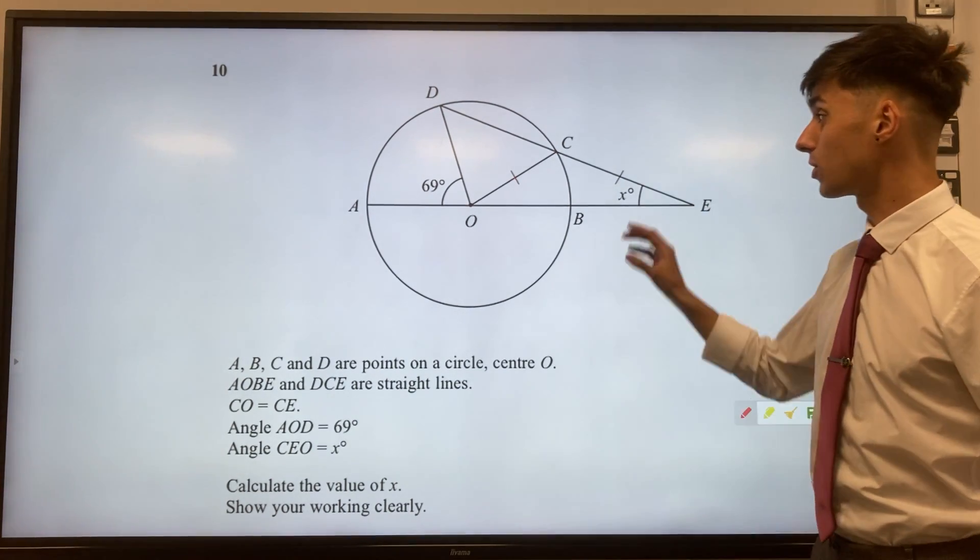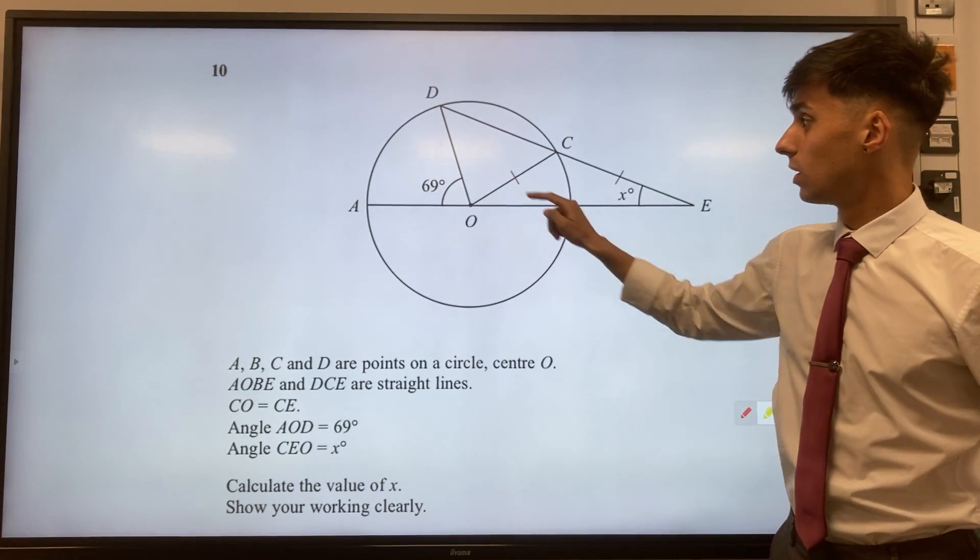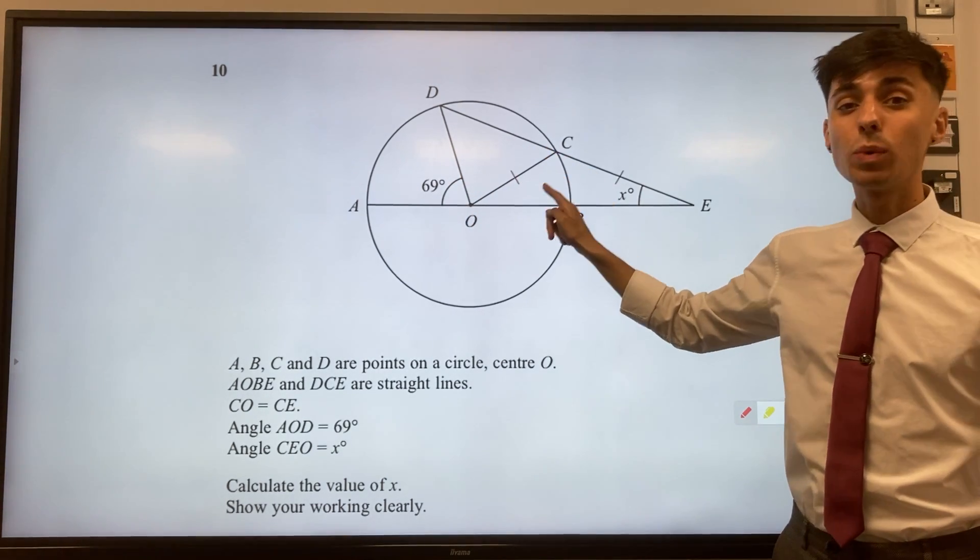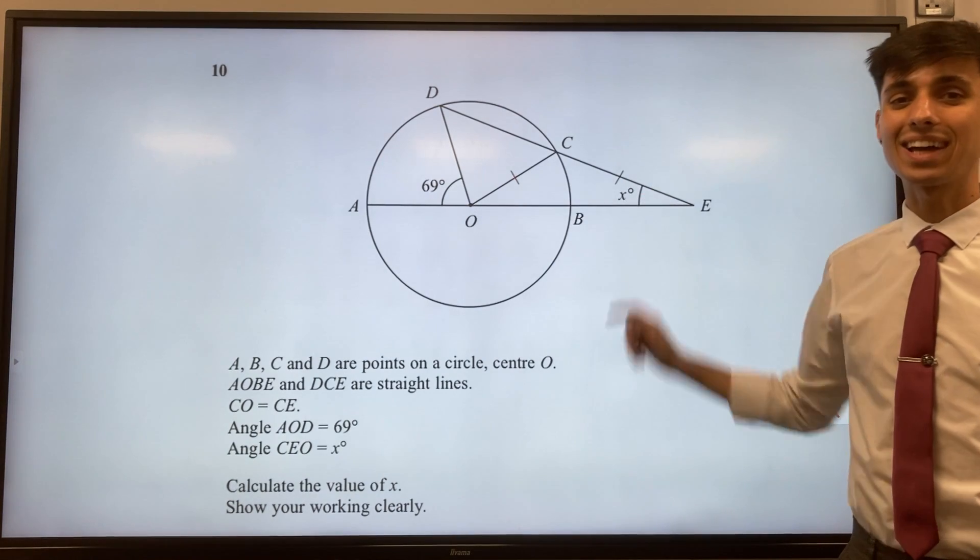In this question we get given a circle with an angle here of 69 degrees, a couple of triangles, and what we want to do is find this missing angle x.